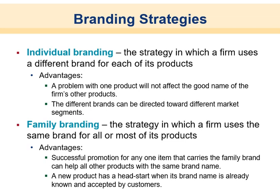Family branding is a strategy where the firm uses the same brand for all or most of its products. The advantage is that successful promotion for any one item carries the family brand and can help other products. A new product gets a head start because its brand name is already known and accepted — think McDonald's, where everything is under the Mickey D's logo, so a new sandwich automatically benefits from brand association.